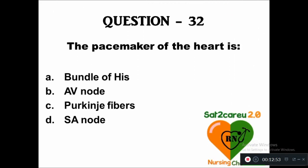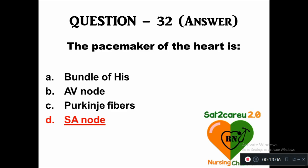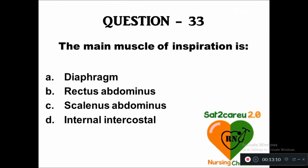Question 32: The pacemaker of the heart is — option A: bundle of His, B: AV node, C: Purkinje fiber, D: SA node. The right answer is SA node. Question 33: The main muscle of inspiration is — option A: diaphragm, B: rectus abdominis, C: scalenus, D: internal intercostal. The main muscle of inspiration is the diaphragm.